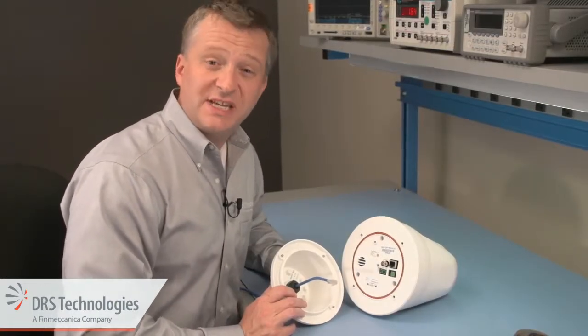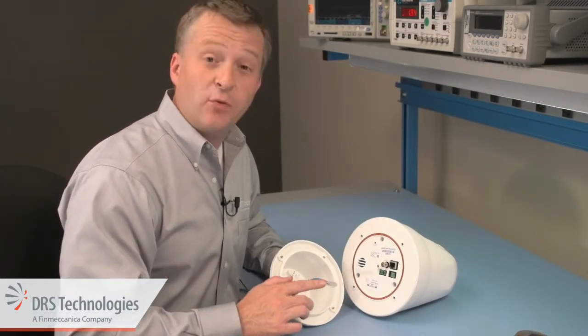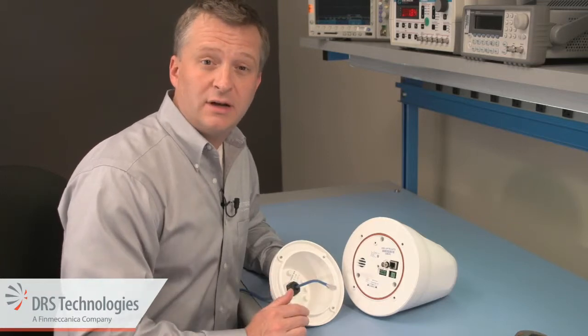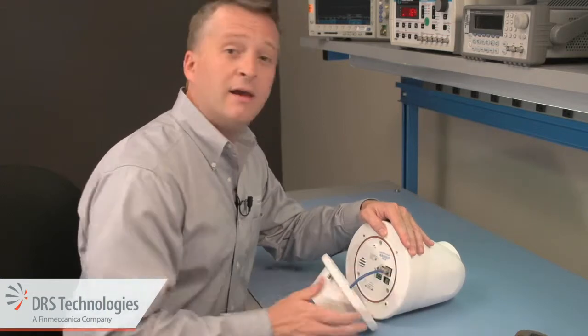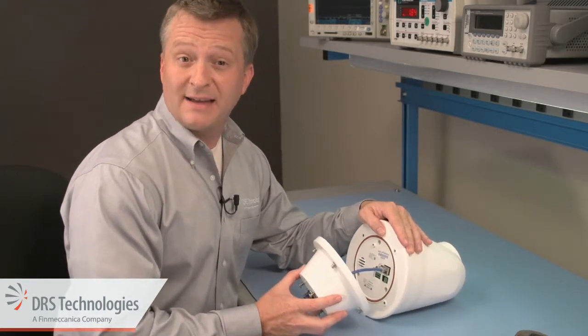For this demonstration, we've skipped ahead and have already attached the RJ45 connector to the Ethernet cable. Plug it into the top of the camera. Next, attach the top hat to the camera body.